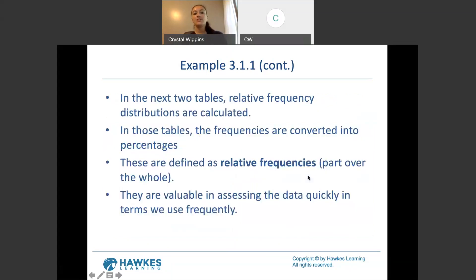In the next two tables, relative frequency distributions are calculated. In those tables, the frequencies are converted into percentages. These are defined as relative frequencies part over the whole, just like a fraction. So, you take the frequency and you divide by the total number of responses that you have in order to get what part of the whole is that category holding.